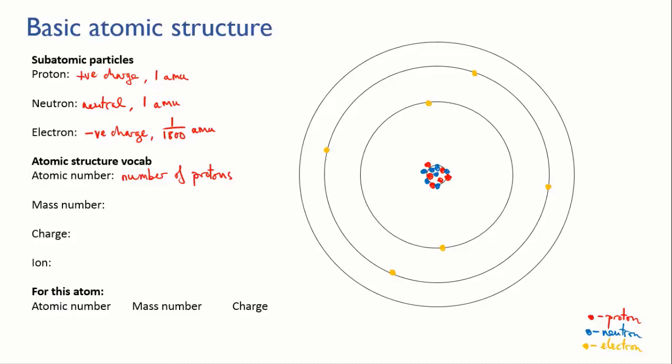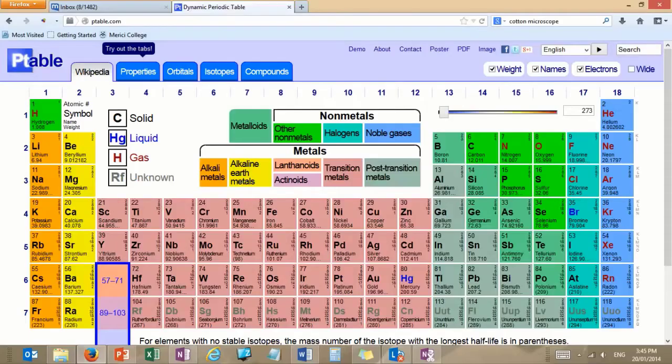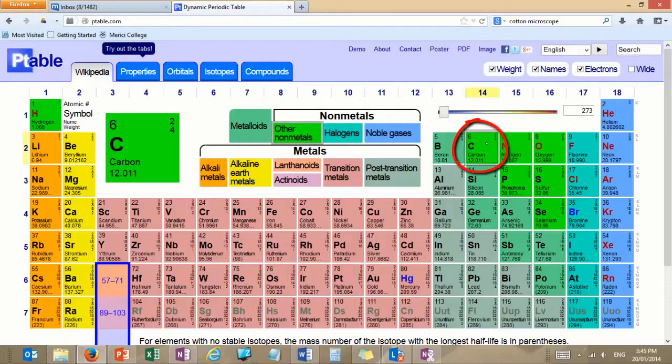It has six protons, and if we were to look at a periodic table, you would find that atomic number six corresponds with carbon. So what we've got is a carbon atom.